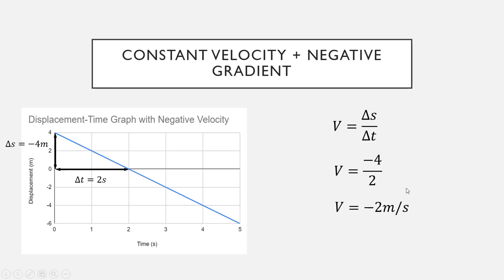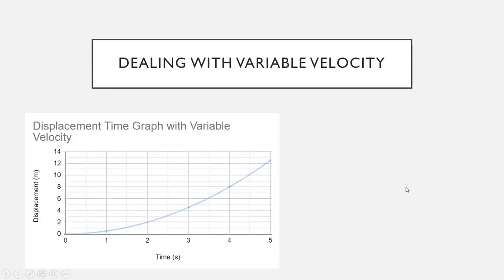If you don't get a negative answer with a negative slope, you've done something wrong. So let's look at our hardest case, which is how do we deal with variable velocity? We've got this graph here. We can't find one simple velocity because this system is accelerating. The velocity is different depending on what the time is.